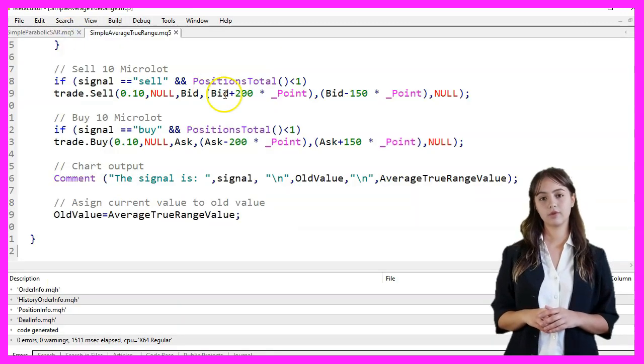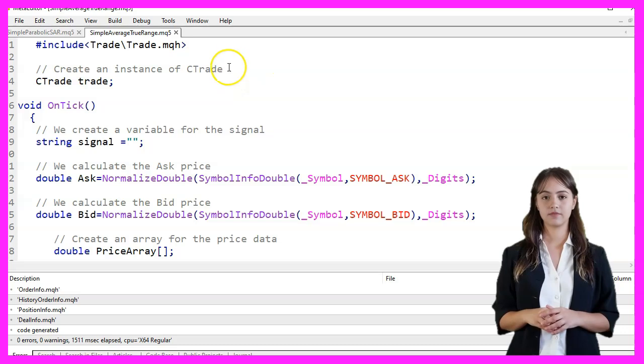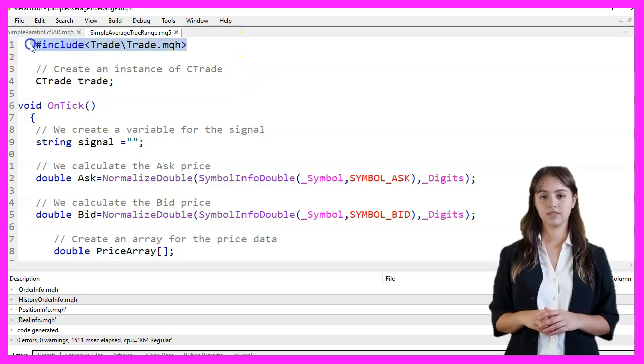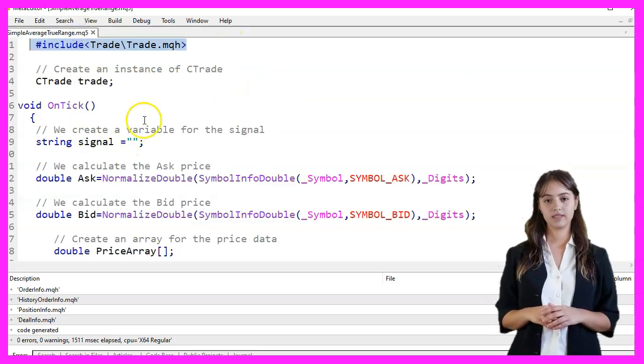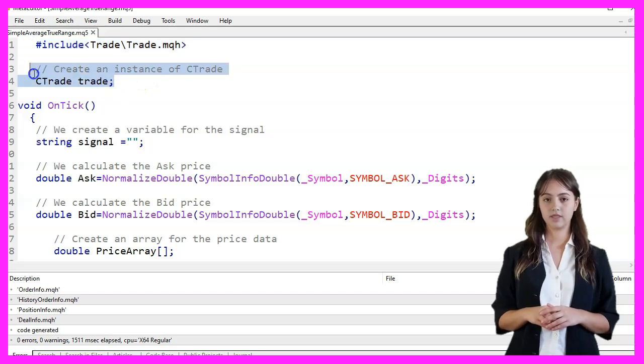First, we include the Trade Library, which provides functions for trading operations. We create an instance of the Ctrade class named Trade.